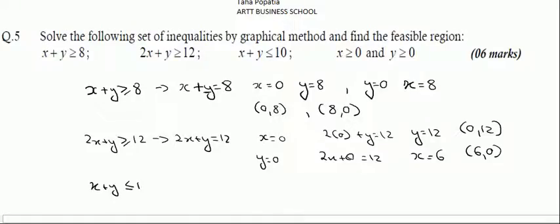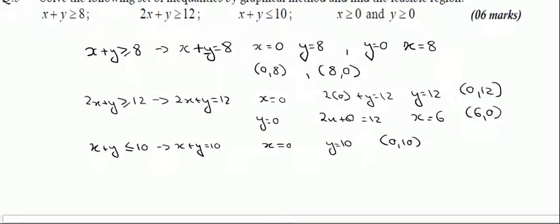For the third line x plus y less than or equal to 10, if x equals 0 then y equals 10, giving point (0,10). If y equals 0 then x equals 10, giving point (10,0).